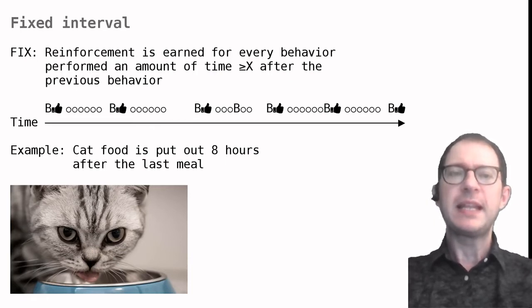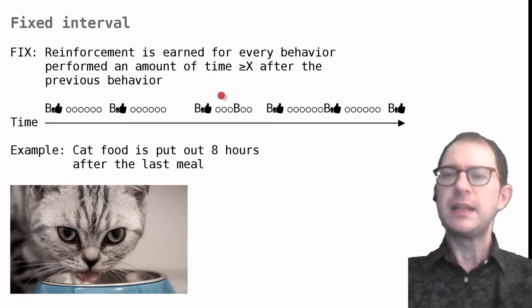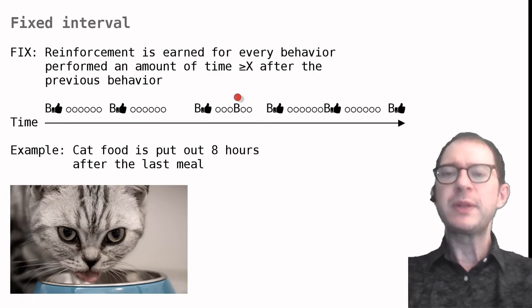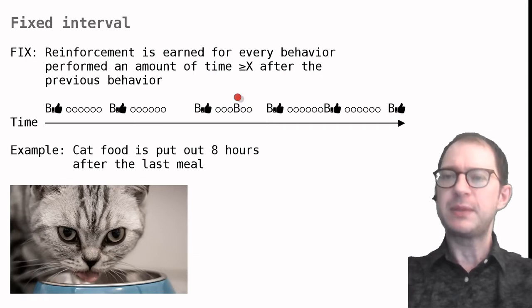In our timeline, I have indicated with circles the time that one needs to wait until the reward becomes available. As you can see, the time is always the same and only behaviors performed after the time has elapsed are rewarded. For example, here there is a behavior performed during this timeout and there is no thumbs up symbol, so there is no reward after that behavior. While for every behavior that is performed after the interval is elapsed, you do have a reinforcement.